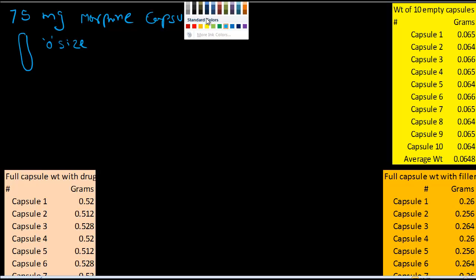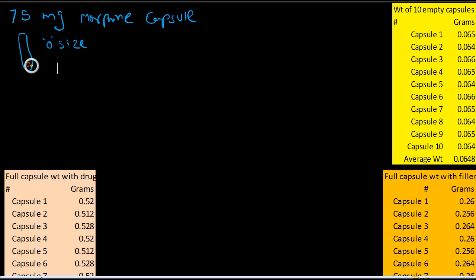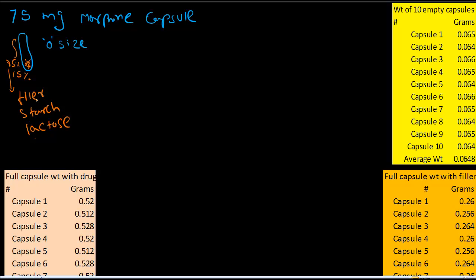So 75 mg in this particular size capsule will occupy roughly around 15%. The rest, approximately 85% of this capsule, should be filled with some kind of filler, such as starch, lactose, methyl cellulose, or any other fillers that are compatible with the drug.